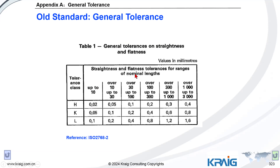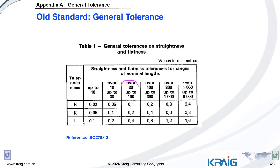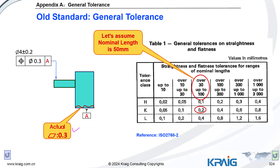Looking at the tolerance table from this standard, you can find straightness and flatness values based on dimension range. Assuming the component dimension is 50 mm, we choose the corresponding column. Since we use class K, the maximum allowed deviation is 0.2 mm, which applies to both flatness and straightness. So we have the actual deformation and the table tells us the maximum flatness allowed is 0.2 mm — and the actual deviation is more than that.